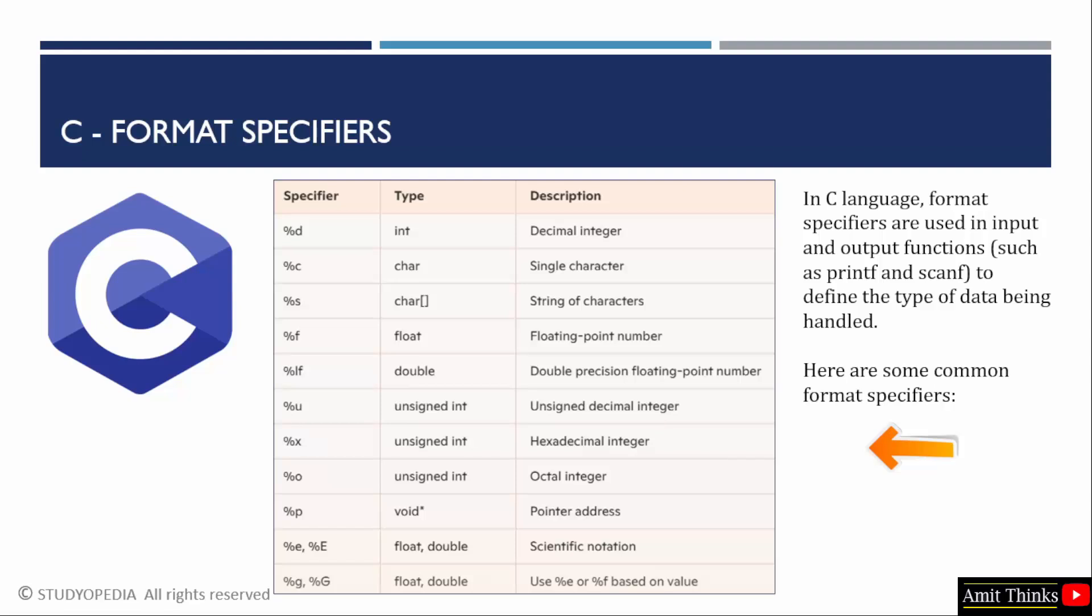Format specifiers in C are used in functions like printf and scanf to define the type of data input or output. They serve as placeholders within a string where values will be inserted or read.